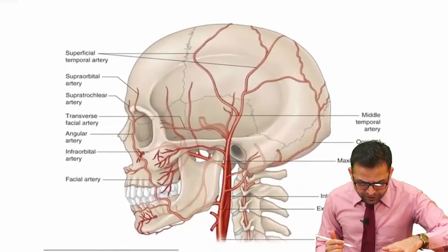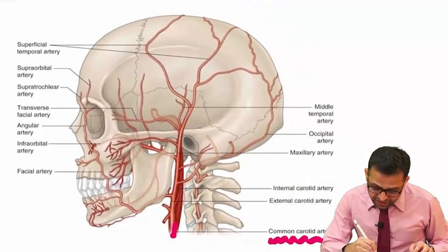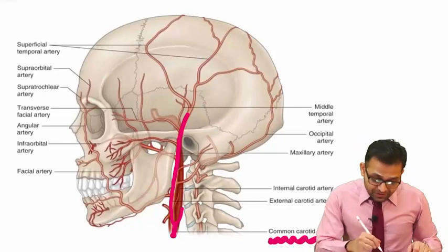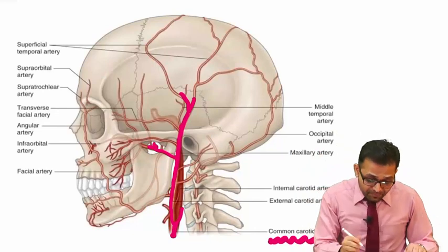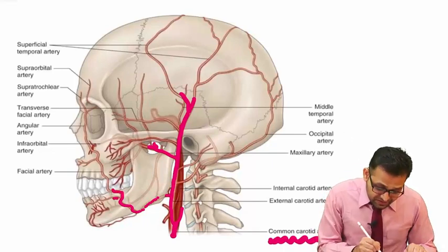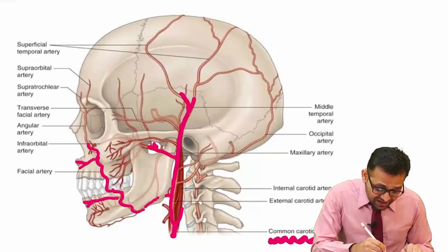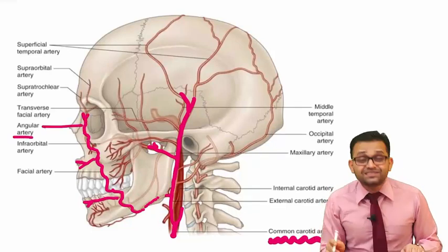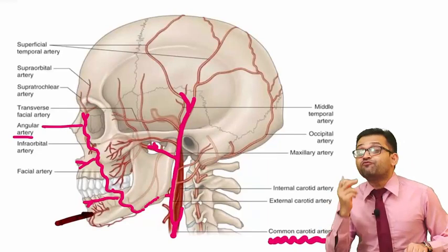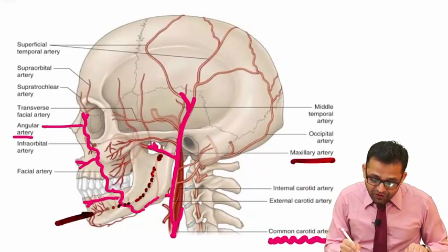For image-based practice, observe this image. You can see the common carotid artery dividing into the internal and the external carotid artery. The external carotid artery gives two terminal branches: the maxillary artery and the superficial temporal artery. You can see the facial artery running with a zigzag course — it gives the inferior labial artery first, then the superior labial artery. The artery running along the medial angle of the eye is the angular artery. At the chin, at the mental area, from the mental foramen, the mental artery comes out, which is actually a continuation of the inferior alveolar artery coming from the maxillary artery.